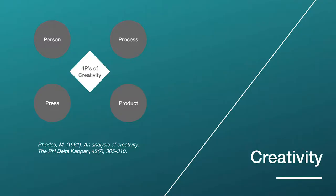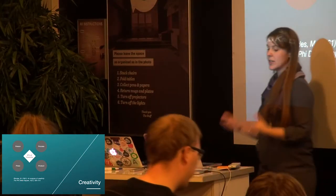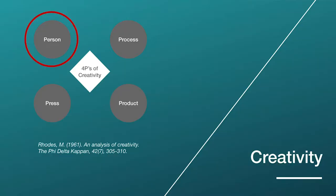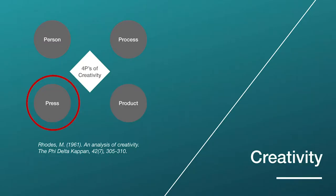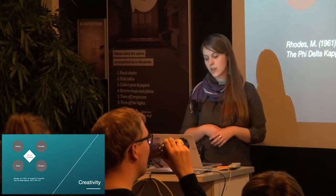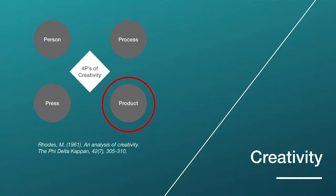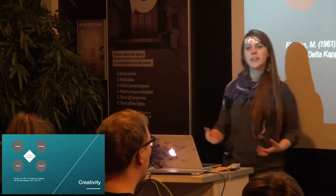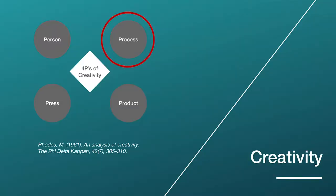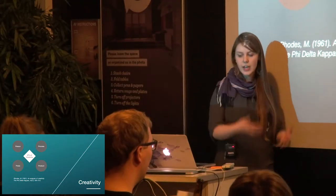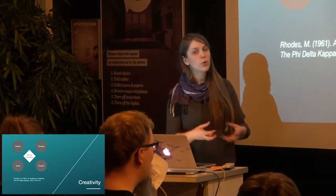Research has looked at creativity from different angles. You usually distinguish four different instances. You can look at the person — the intellectual characteristics of a person and how this impacts the creative process. You can look at the press, which is the environmental and external impact on creativity, whether physical or social. You can look at the creativity of a product or outcome — how novel and innovative it is. And you can look at the process, which is basically the chain of actions and events involved in doing creative work.